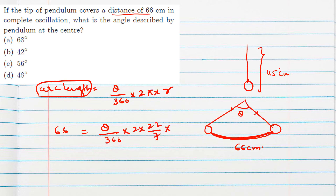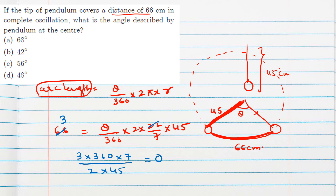The length of the pendulum (45 cm) is treated as the radius. After substituting and cancelling — 22 threes are 66, cancelling terms and simplifying — we get 2 × 45 = theta × (180 cancelled from 3), giving theta = 12 × 7 = 84 degrees. The answer 84 degrees is not in the options, likely due to a misprint; 48 may be listed instead.